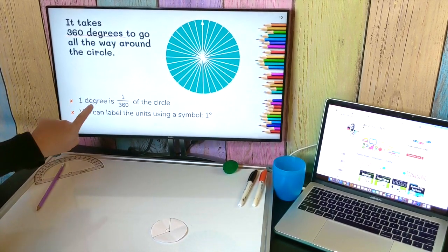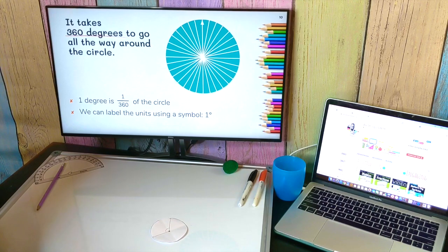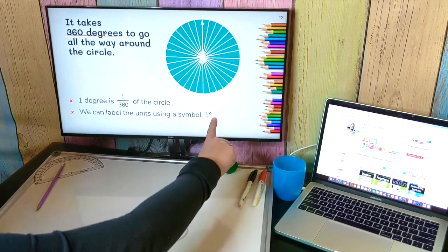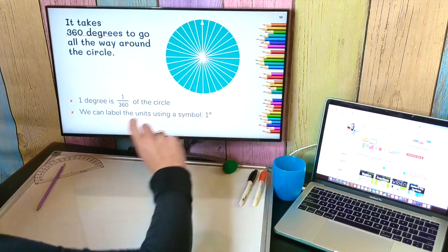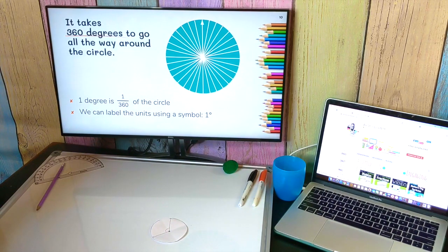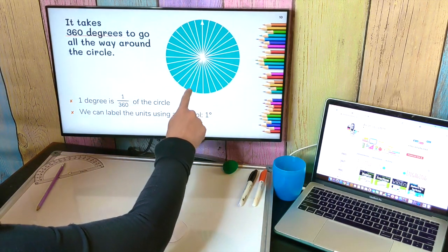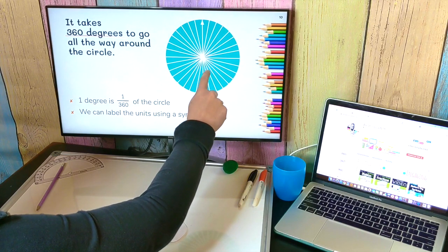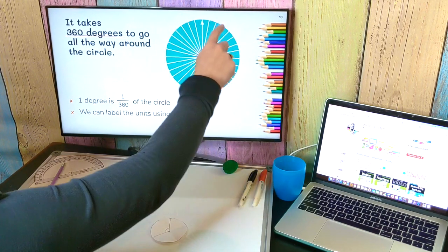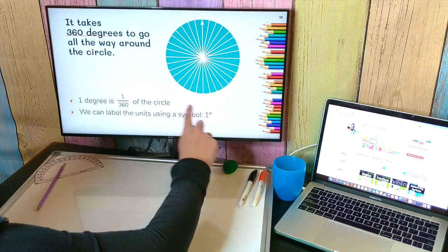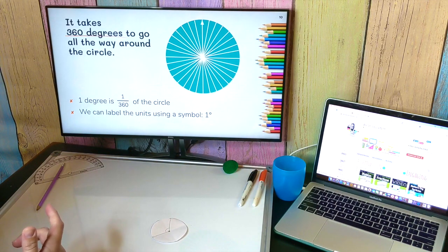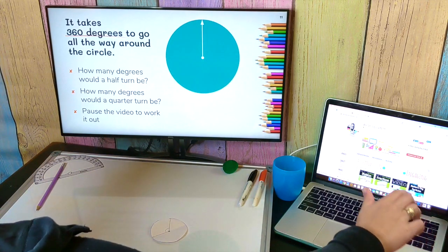Now, instead of writing out the word degrees every time, we have a little symbol that you can use. It's this tiny circle that you put up here above your number, on the right-hand side. Notice how degrees are representative of what fraction of the circle we're talking about? Well, you can use a little circle to represent the word degrees.